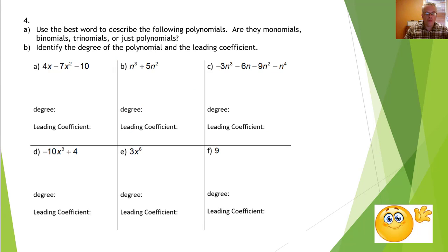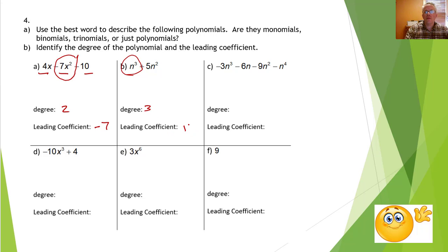One last thing: we want to find the degree of the following polynomials and find what's called the leading coefficient. I look for the term with the largest exponent — that's the leading term. For the first one the degree is 2, and the leading coefficient is negative 7. The next one: the term with the largest exponent gives degree 3 and leading coefficient 1. This one's not in order, but the term with the largest degree has degree 4 and leading coefficient negative 1. They're not always in order. This one's leading term has degree 3 and leading coefficient negative 10.